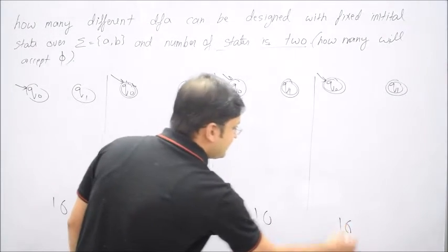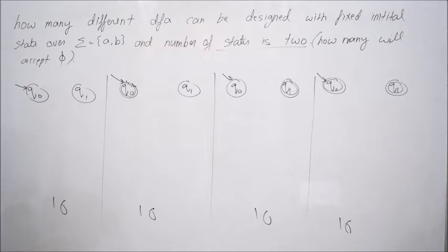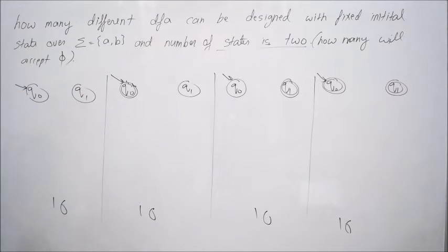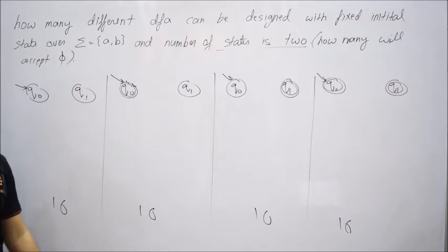Now you see, out of those cases we know already that all these cases have how many combinations? 16 combinations. So I want that nothing is to be accepted and what are the favorable states? Those which are non-final nature. You see in the very first case both the states are non-final.